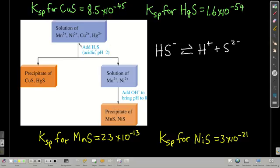So let's say we had a solution of manganese 2+, nickel 2+, copper 2+, and mercury 2+. It ends up, here's the KSPs. Copper 2 sulfide is about 8.5 times 10 to the minus 45, and mercury 2 sulfide is 1.6 times 10 to the minus 54. Now manganese sulfide is 2.3 times 10 to the minus 13, and nickel sulfide 3 times 10 to the minus 21.